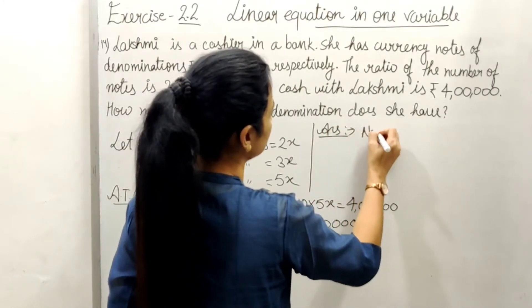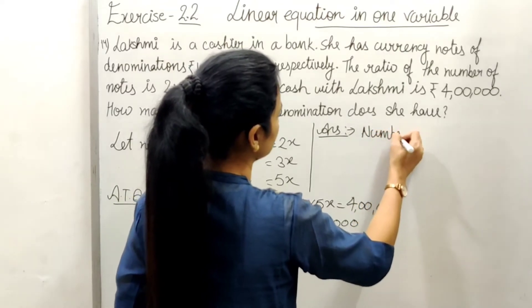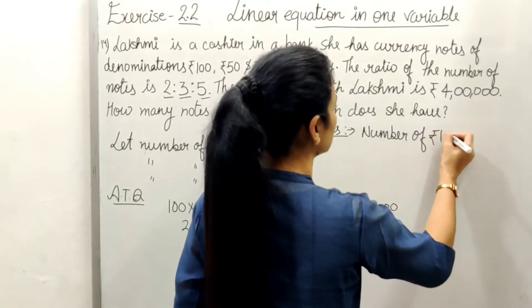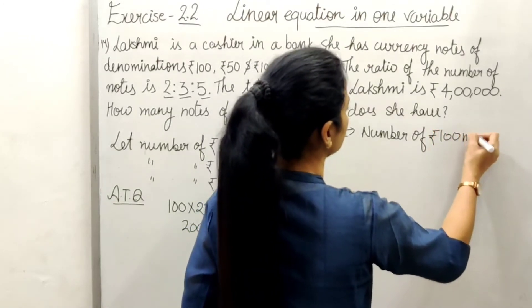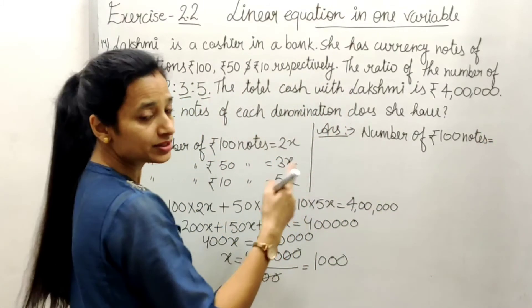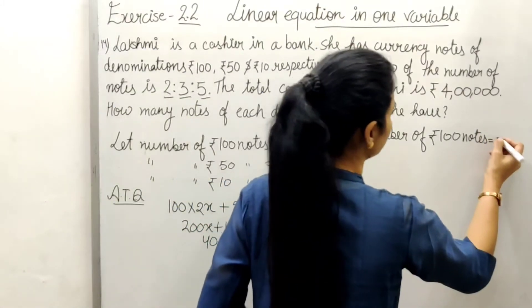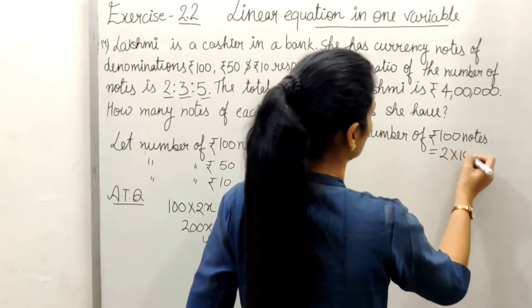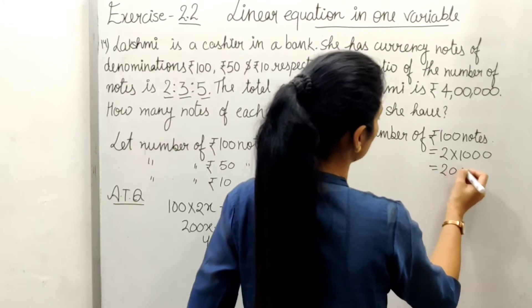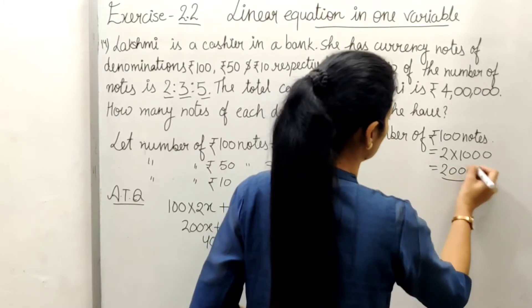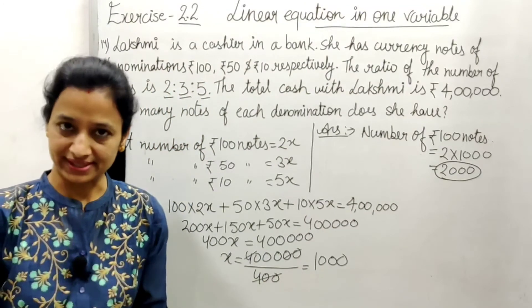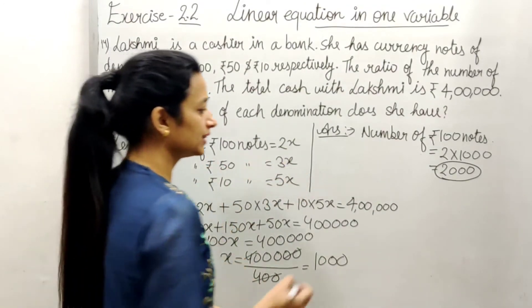Number of ₹100 notes equals 2x, which we assumed. So it will be 2 times 1000, which gives us 2000. So we have 2000 notes of ₹100.